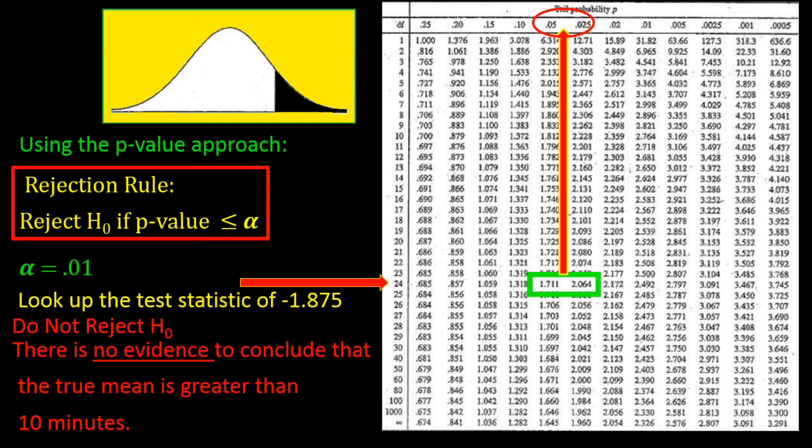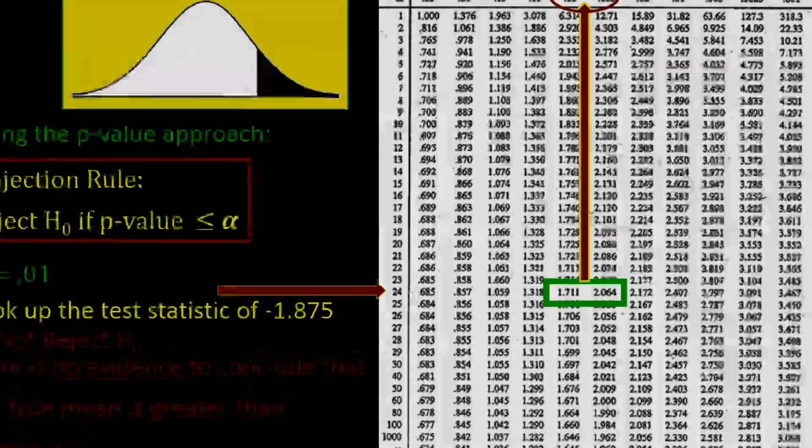As you can see, the conclusion is the same whether you use the critical value approach or the p-value approach. That concludes this tutorial on hypothesis testing for the population mean when sigma is unknown. We covered both two-tailed and one-tailed tests, and we used the critical value approach and the p-value approach to come to a statistical conclusion. I hope you enjoyed this tutorial on hypothesis testing part two.